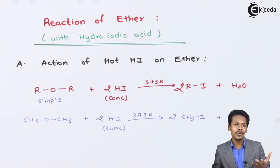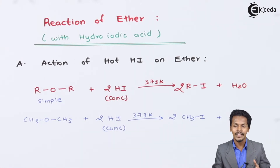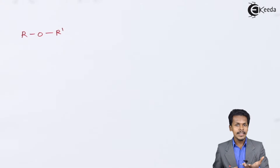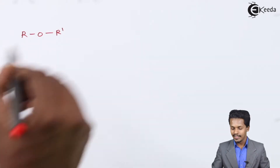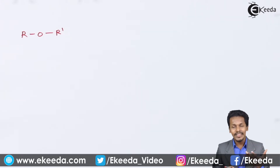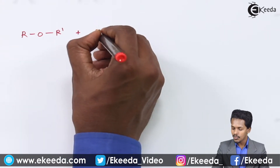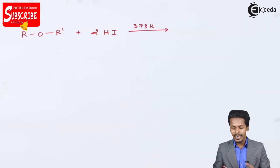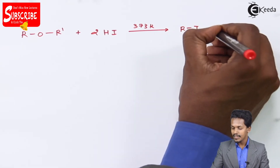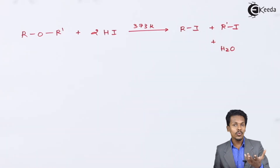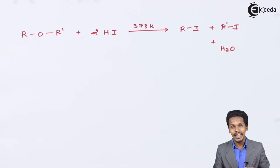Now, treating a mixed ether with hot HI — considering ROR', where R' has more carbon atoms than R — with two moles of HI at 373 Kelvin, the products are RI plus R'I along with water as a by-product. So we get a mixture of two different alkyl halides. HCl doesn't react with ether, which is why we use hydroiodic acid.